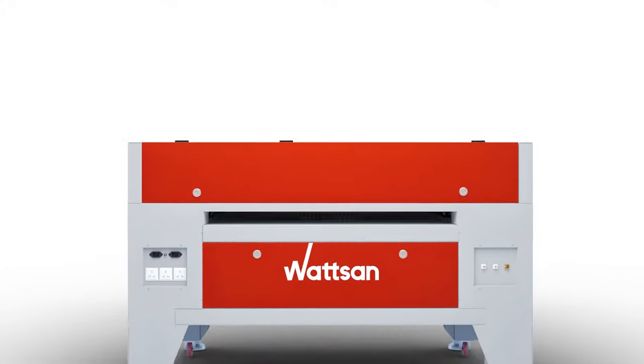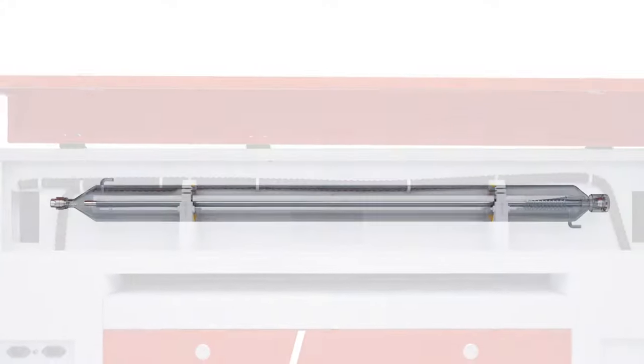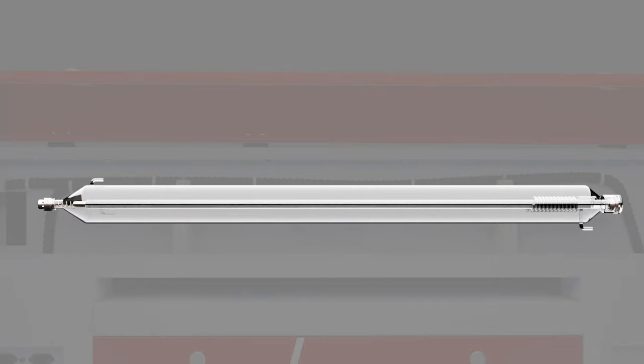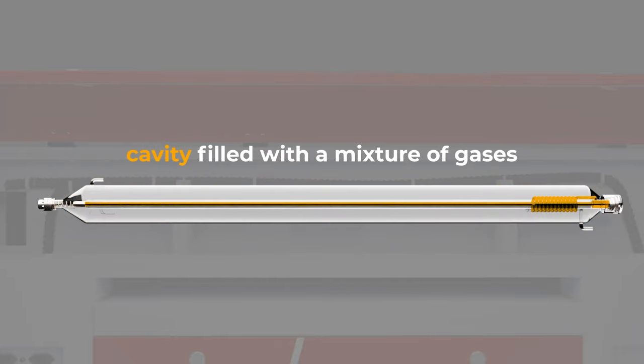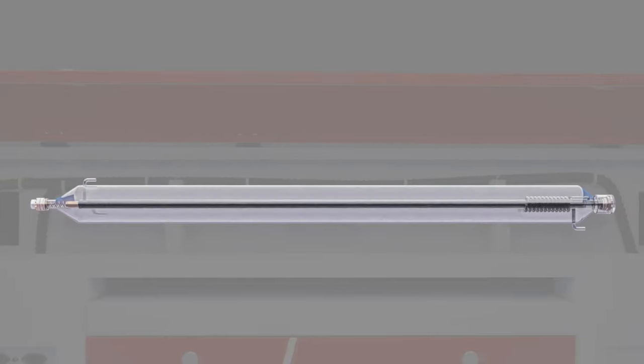CO2 laser machines consist of a glass tube, which is a bulb with three internal cavities. The outer and inner cavity is filled with a mixture of carbon dioxide, nitrogen and helium, while the middle cavity is designated for water cooling.